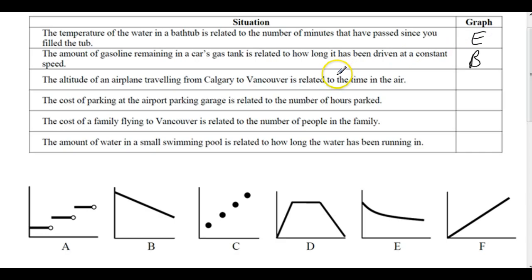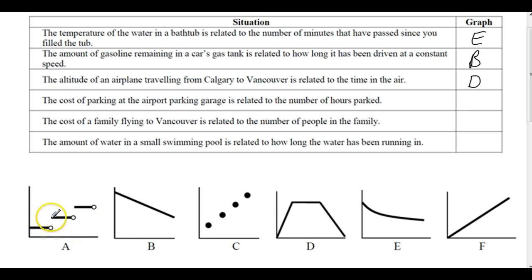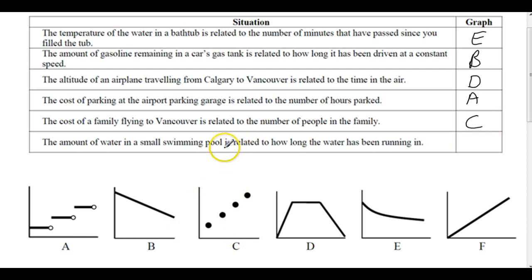The altitude of an airplane traveling from Calgary to Vancouver is related to time — you climb up, cruise, then descend to land, so that's graph D. The cost of parking at an airport garage is related to hours parked — this is a step function: you pay a set amount, then step up to the next level each hour, for example $1.25, then $2.50, then $3.75, and so on. The cost of flying to Vancouver is related to the number of people in the family — this must be discrete since you can't have a fractional person; one person costs a fixed amount, two people double that, etc. The amount of water in a small pool is related to how long the water has been running — water goes up over time, and that is graph F.